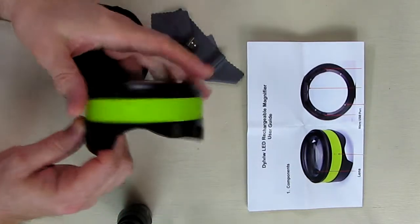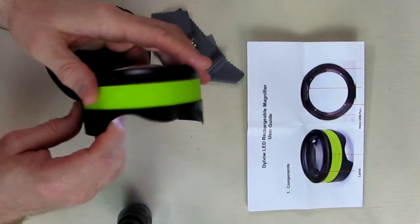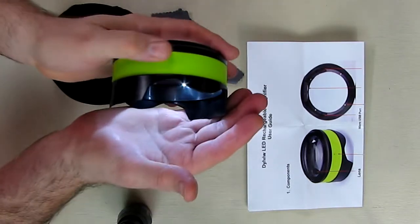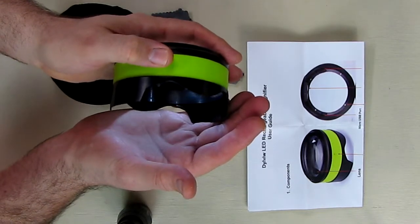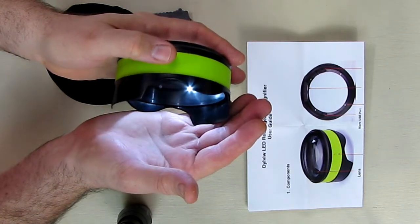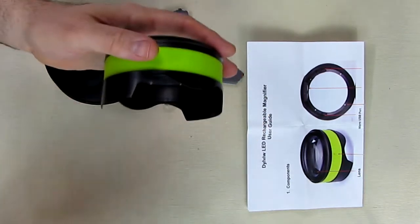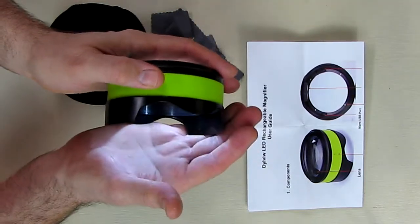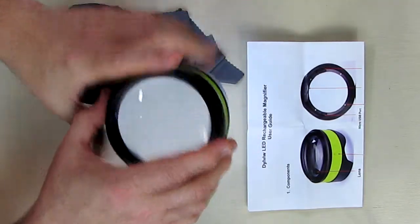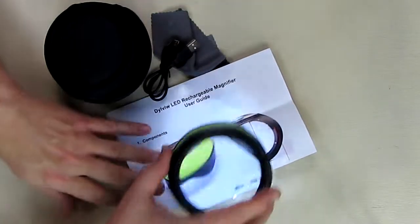On the side here you'll feel a little dimple, and that is where you can click it once and you can see one level, and then a dimmer, and then off. So you have that brightness, dimmer, then off. So you have two brightness levels there. We're going to put it on the maximum brightness right there so we can demonstrate.